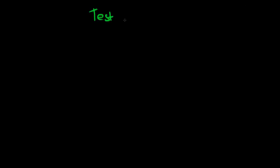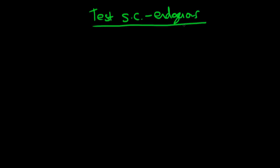In this video we're going to talk about how we go about testing for serial correlation in the presence of endogenous regressors. An example of a typical endogenous regressor might be if we include a lagged dependent variable in our model. The tests which are robust to the presence of endogenous regressors are frequently named after the econometricians Breusch and Godfrey, so it's often known as the Breusch-Godfrey test for serial correlation.